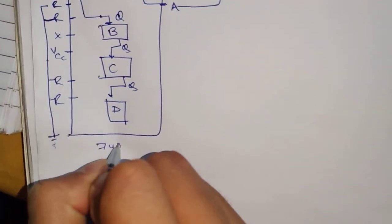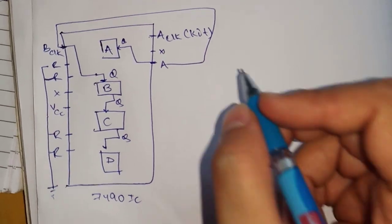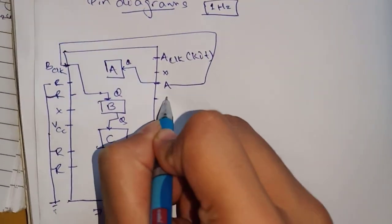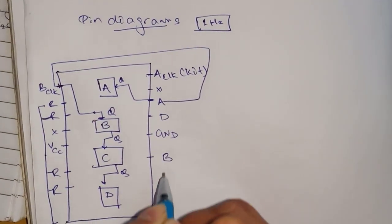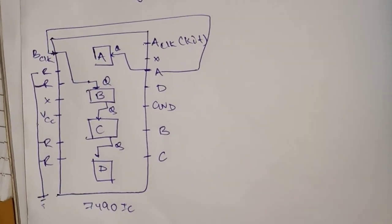After A you have D, then ground, then B, and then C. This is the complete pin diagram of 7490 IC.